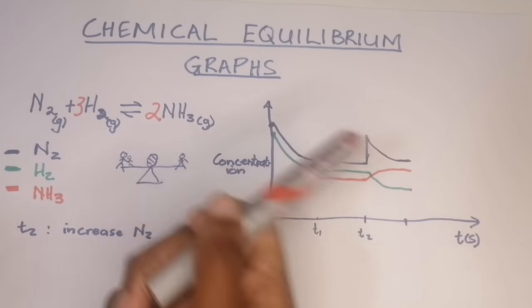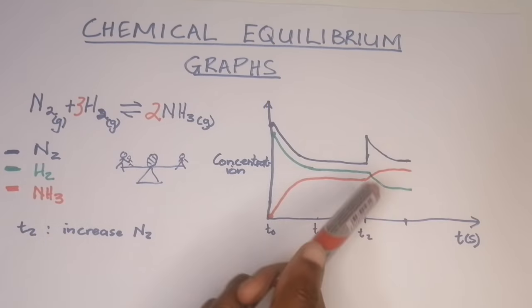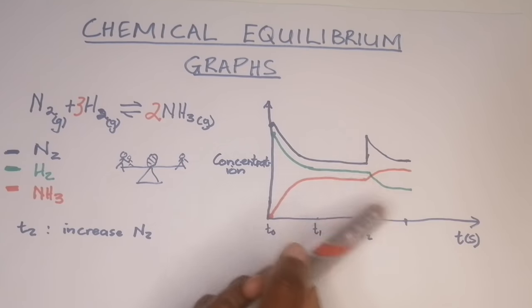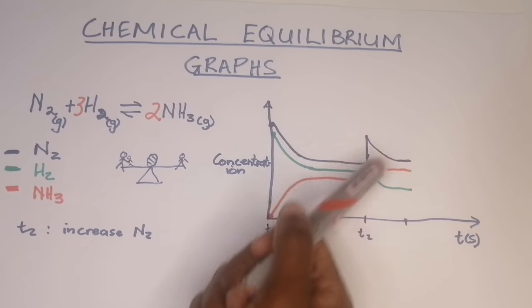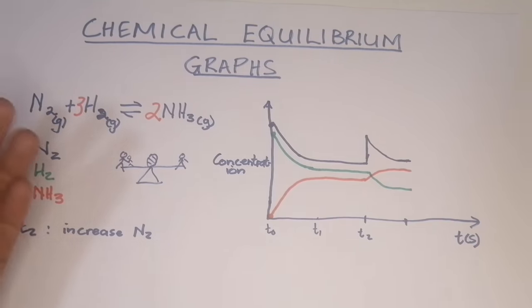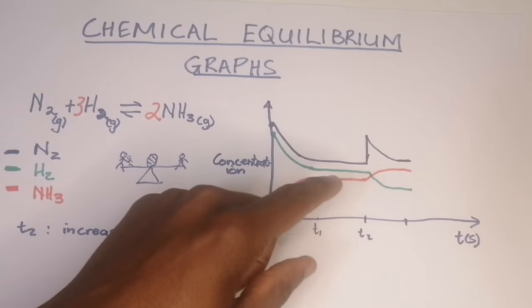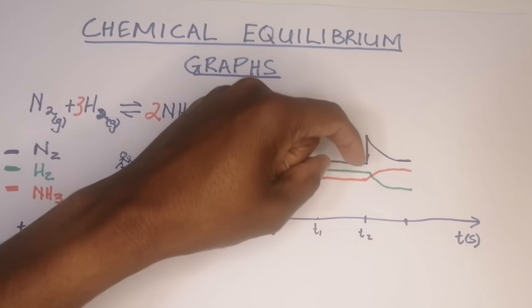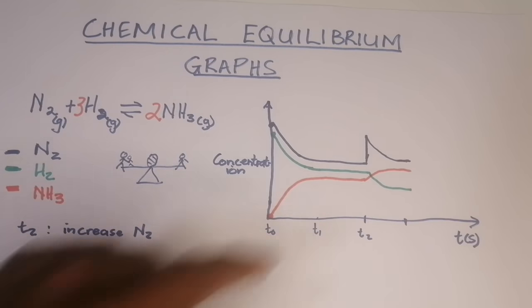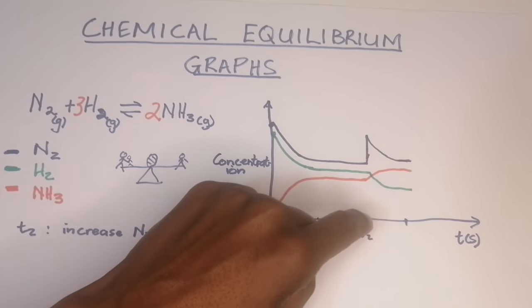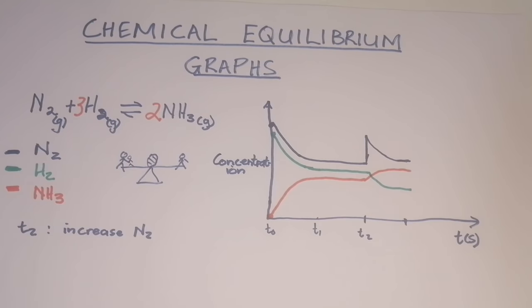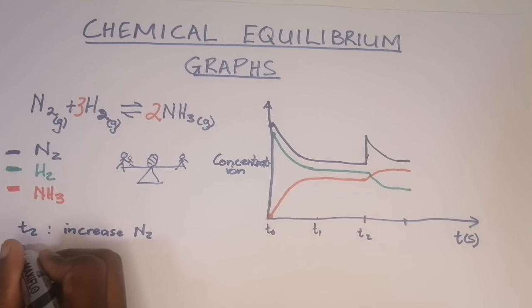When you see a graph where one of the concentrations increases sharply and the others don't, it tells you that particular substance was added. If one decreased sharply instead, the reaction that opposes that would be favored. I hope that makes sense — this is not an easy section, but let's continue.